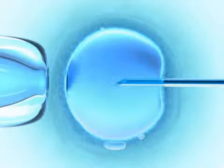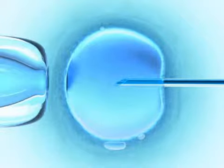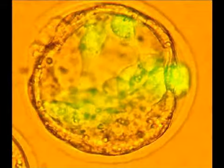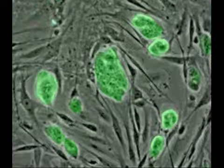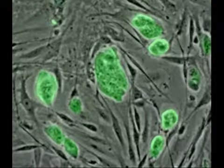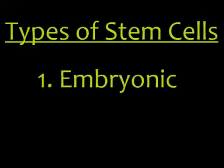Stem cells are unspecialized cells that have the capability to develop into any type of specialized cell found in the human body. In addition to this, stem cells have the ability to replicate themselves for long amounts of time. There are two main types of stem cells: embryonic and adult.